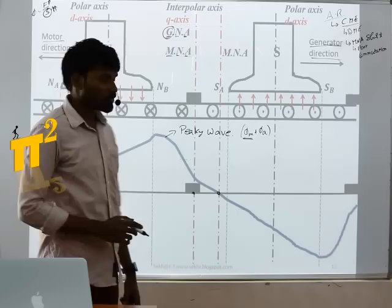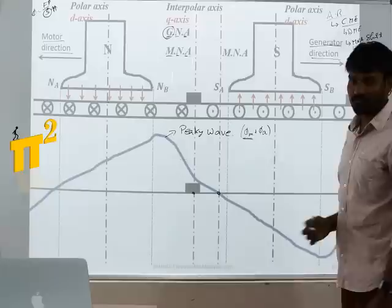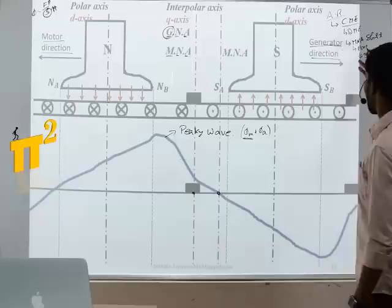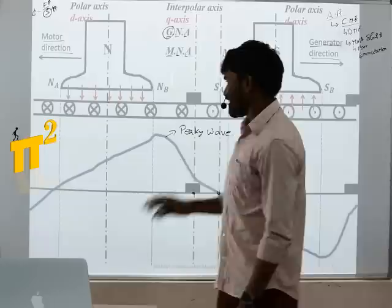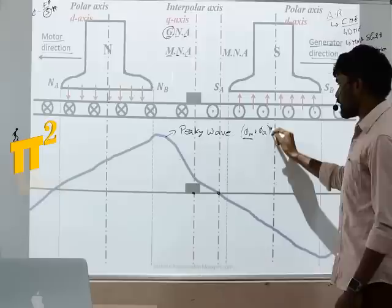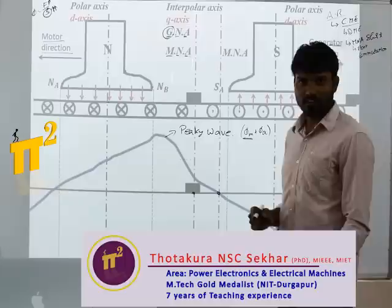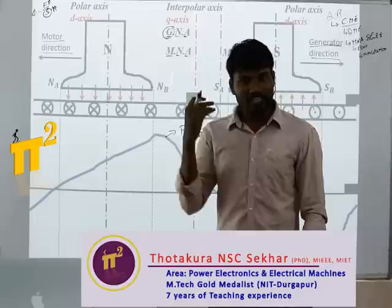Poor commutation means sparking at the brushes, which leads to more maintenance and damage of commutator segments and brushes. One way to avoid this is to allow no current in the armature conductor — if IA is zero, there is no armature reaction, no MNA shift, and no sparking. Good commutation results. But if no current flows in the conductor, there is no use of having a machine.